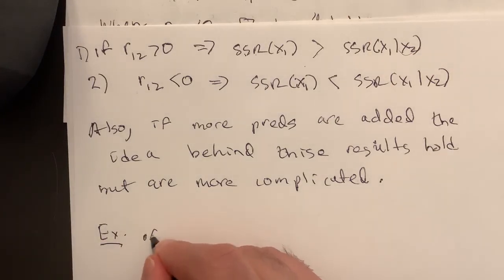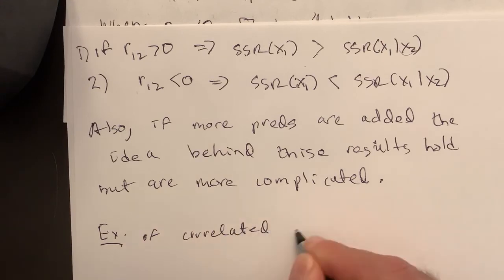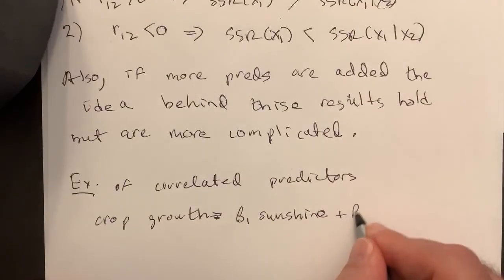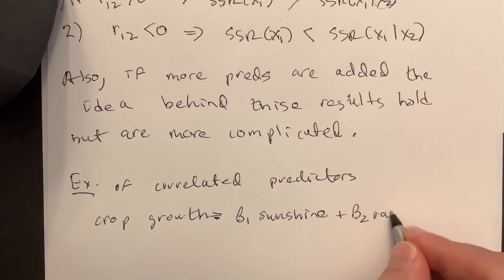So an example, say of correlated predictors is, say we have crop growth equals beta 1 times sunshine plus beta 2 times rainfall.